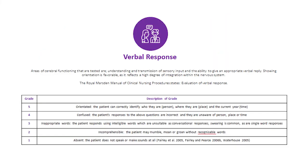Verbal Response — the areas of cerebral functioning tested are understanding and transmission of sensory input and the ability to give an appropriate verbal reply. A score of 5 is allocated when the patient can correctly identify who they are (person), where they are (place), and the current year (time). A score of 4 is allocated when the person's responses are incorrect and they are unaware of person, place, or time — this is classed as confused.